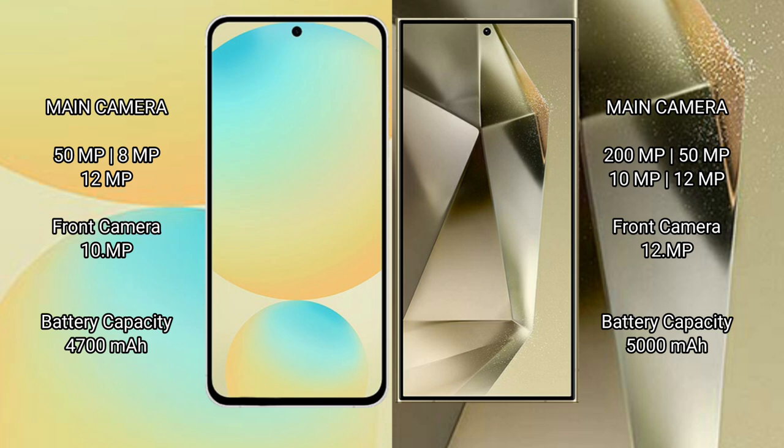Samsung Galaxy S24 FE has a 4700mAh battery with 25-watt fast charging support. Samsung Galaxy S24 Ultra has a 5000mAh battery with 45-watt fast charging support.